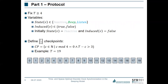For example, if we set the period to 19, then the checkpoints are 0, 4, 8, and 12. We do not include checkpoint 16 because the distance between 16 and its next checkpoint 0 would only be 3, violating the second condition of the checkpoint set definition.